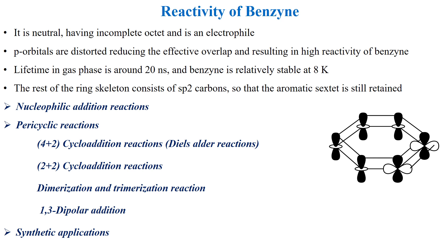First of all, we will see why benzyne is so reactive. Benzyne is highly reactive due to the less effective overlapping of sp-orbitals and incomplete octet. These two sp-orbitals are not effectively overlapped, while all other six p-orbitals are effectively overlapped and the aromatic sextet is still retained. Benzyne is neutral, having an incomplete octet, and behaves as an electrophile. Its lifetime in the gaseous phase is 20 nanoseconds, and it is stable at very low temperatures like 8 Kelvin.